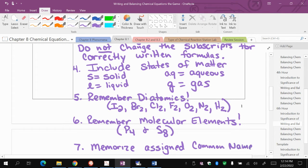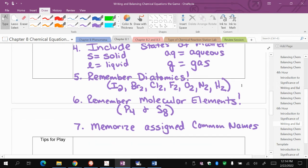And then you want to memorize the assigned common names from chapter 7.1. These were the ones for the acids, like hydrochloric acid, acetic acid, nitric acid, and ammonia. Those were all in chapter 7.1.